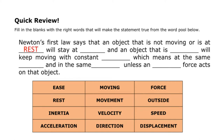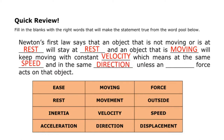Newton's First Law says that an object that is not moving, or is at rest, will stay at rest, and an object that is moving will keep moving with constant velocity — which means at the same speed and in the same direction — unless an outside force acts on that object.